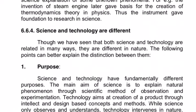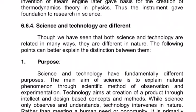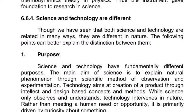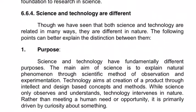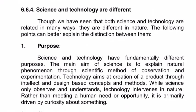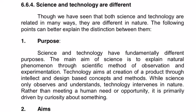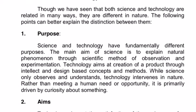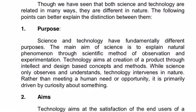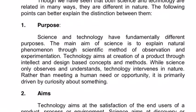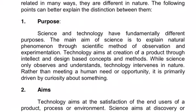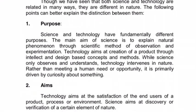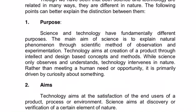Science and technology are different. Though both science and technology are related in many ways, they are different in nature. First, purpose. Science and technology have fundamentally different purposes. The main aim of science is to explain natural phenomena through the scientific method of observation and experimentation. Technology aims at creation of a product through intellect and design-based concepts and methods. While science only observes and understands, technology intervenes in nature, and is primarily driven by curiosity rather than meeting a human need or opportunity.